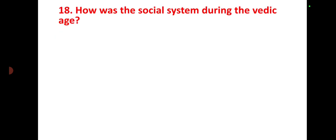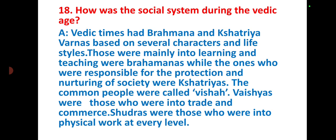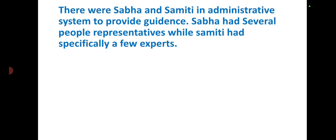Question number eighteen: how was the social system during the Vedic age? The Vedic times had a Brahmana and Kshatriya varna based on characters and lifestyle. Those mainly into learning and teaching were Brahmanas, while those responsible for the protection of society were Kshatriyas. Common people were called Vishas — those in trade and commerce. Shudras were those in physical work. At every level there were Sabha and Samiti in the administrative system: Sabha represented several people's representatives, while Samiti consisted specifically of experts.